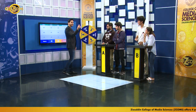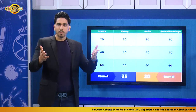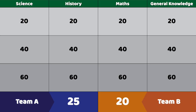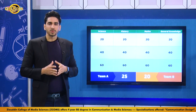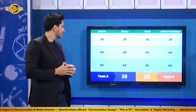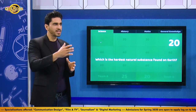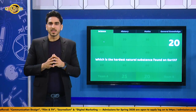Team B wins the spinner by the narrowest margin. The round two categories are science, history, maths, and general knowledge, with point totals of 20, 40, and 60. Team B chooses science for 20. The question: which is the hardest natural substance found on earth? Team B buzzes first and answers diamond. That is absolutely correct!